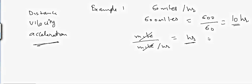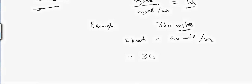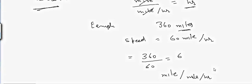In the second example, you want to drive 360 miles and your speed is 60 miles per hour. How much time will it take? That will be 360 divided by 60, which equals 6. Looking at the units: miles divided by miles per hour equals hours — so the answer is 6 hours. That is how you solve for distances.